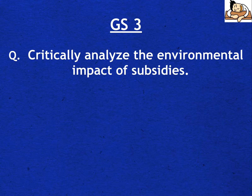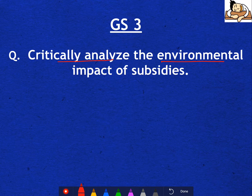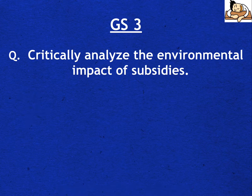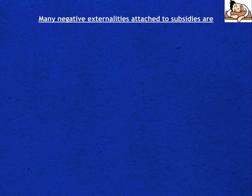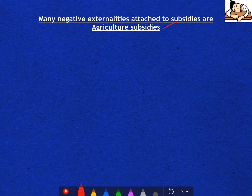Next is GS3. The question is: critically analyze the environmental impact of subsidies. You have to analyze the negative and then the positive impact — mostly the points will be on negative impact. The negative externalities attached to subsidies — first we'll talk about agricultural subsidies and then energy subsidies.